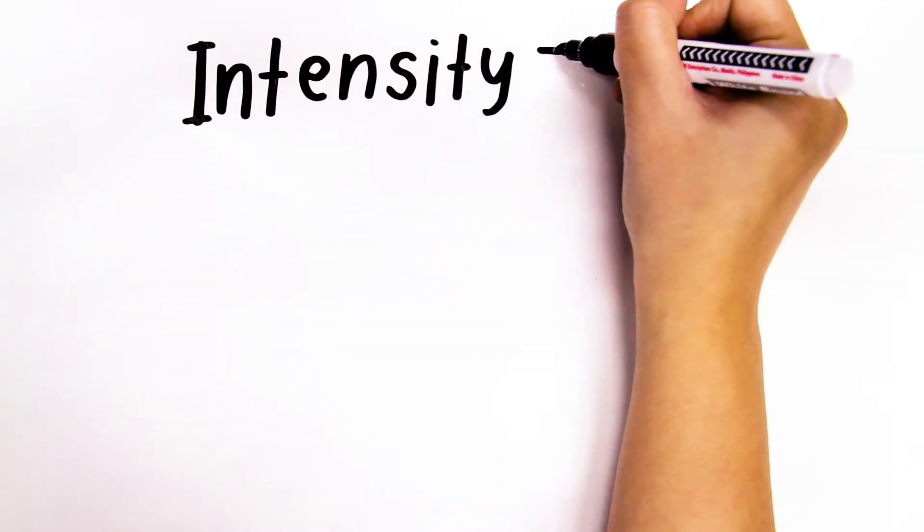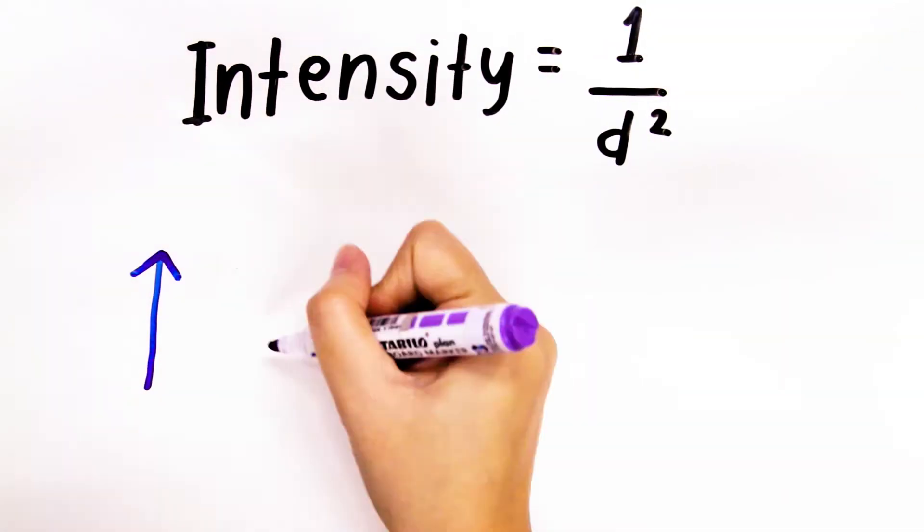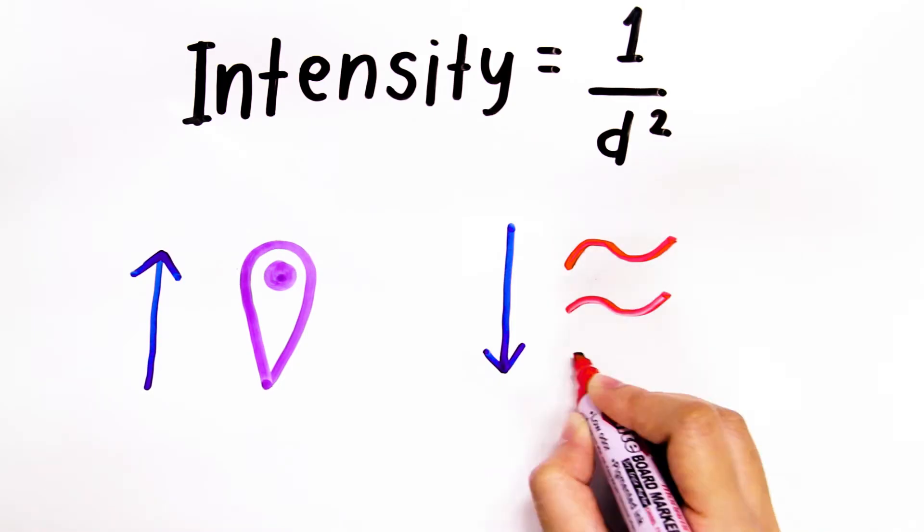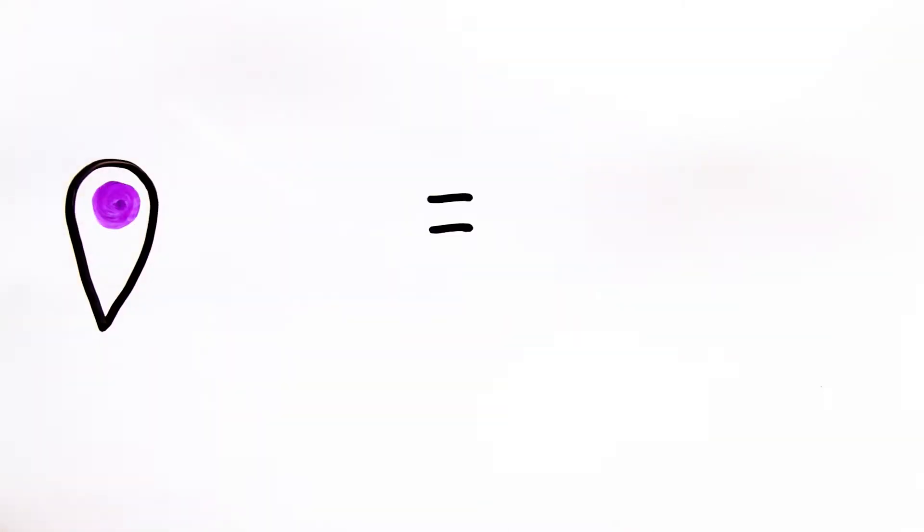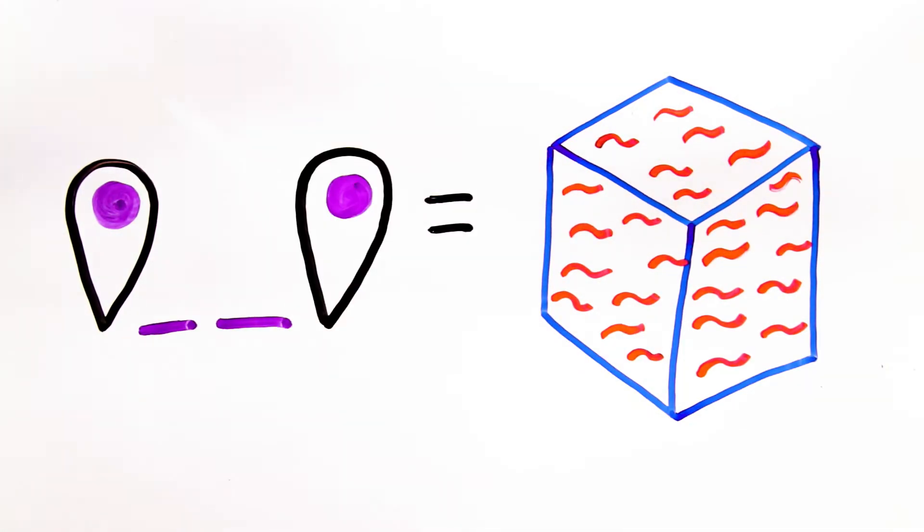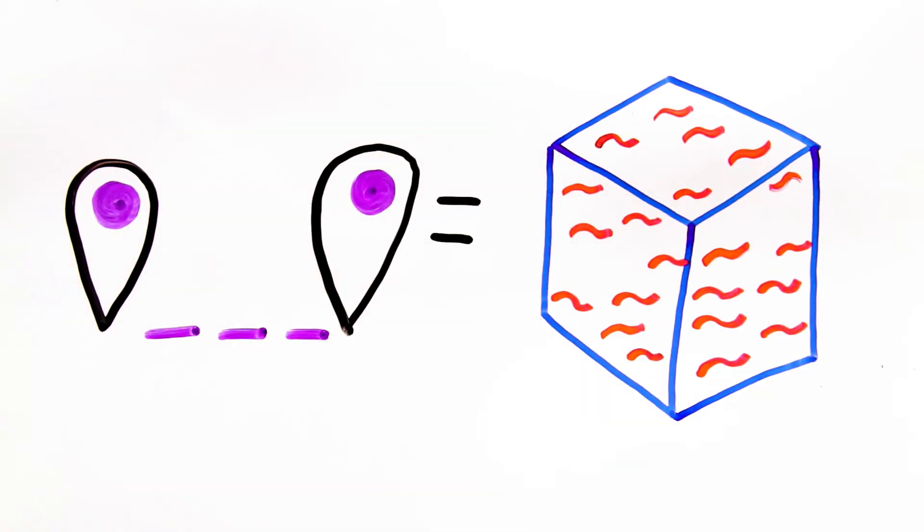For every unit of increase in the distance between you and the radiation source, the dose is reduced by the square of the increase in distance. So if you increase your distance by 2, you reduce your radiation dose by 4. If 3, then by 9. And so on and so forth.